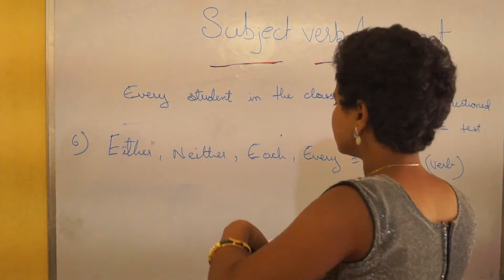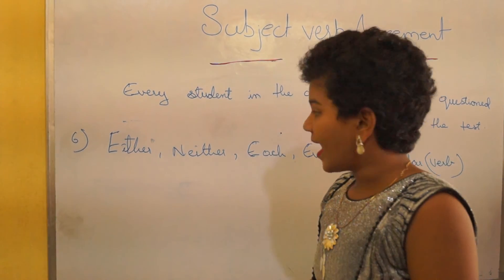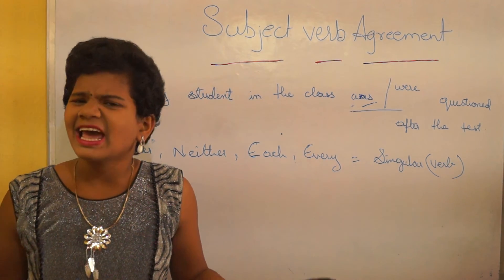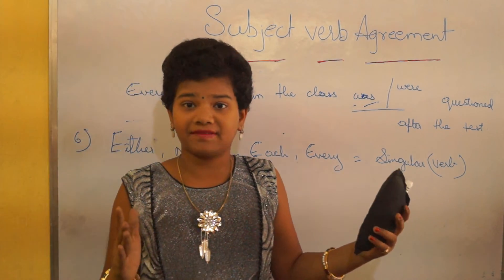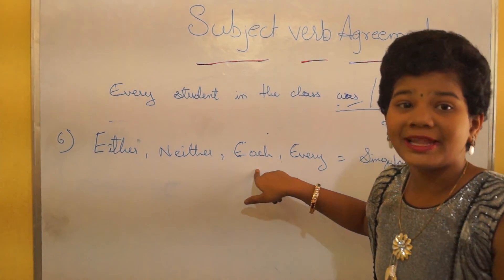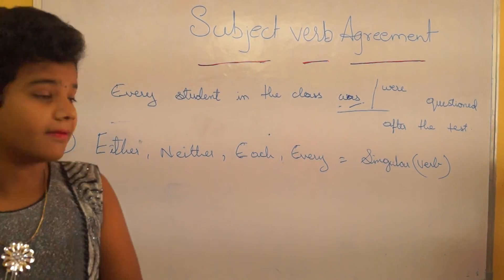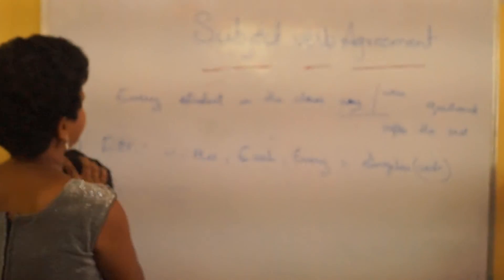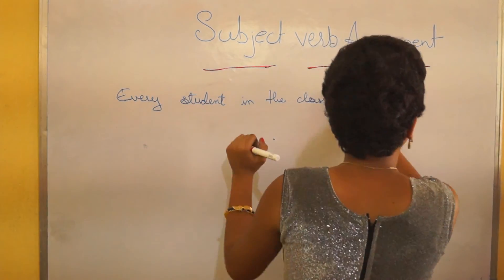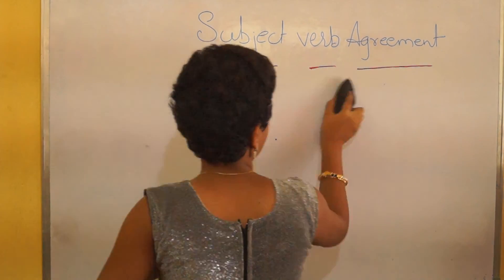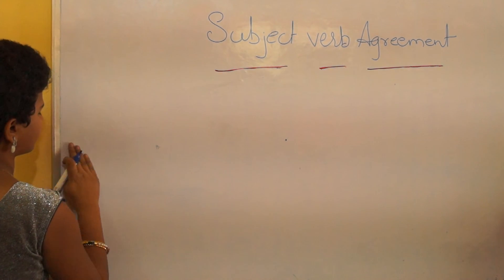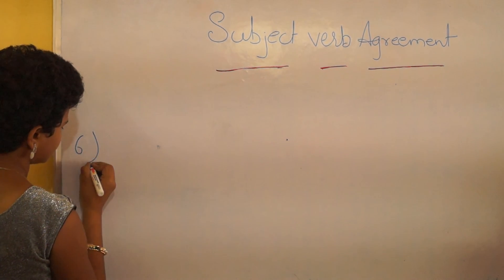Some more examples: 'Either way is correct.' 'In this class, neither speaks a foreign language.' 'Each player tries to win the game.' 'Every student in the class was questioned after the test.' Now let us go for the sixth exception.